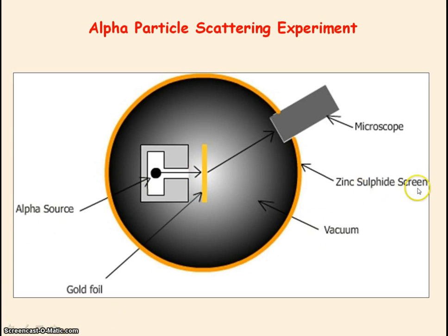The zinc sulphide screen detected the alpha particles as they produced a tiny flash of light when the alpha particles hit the screen. These tiny flashes of light could be viewed through the microscope. The microscope was moved around the screen to detect the alpha particles hitting the screen at different angles.